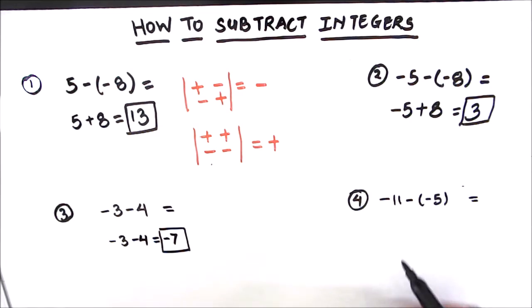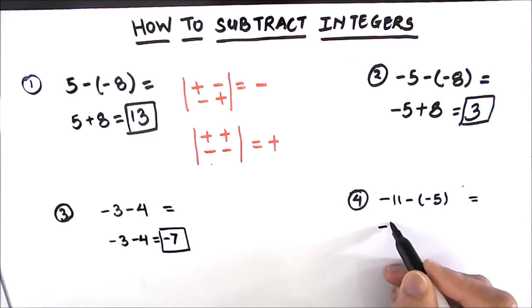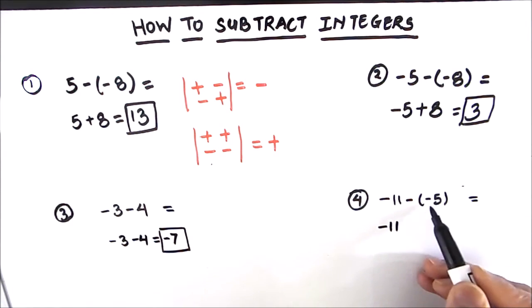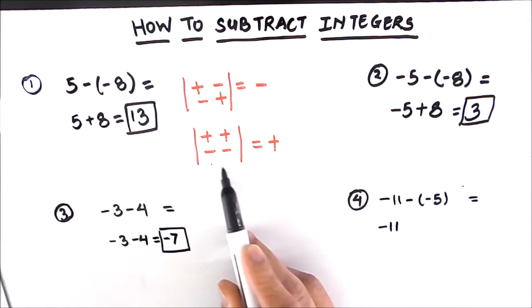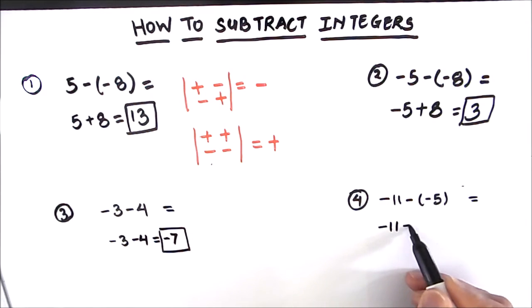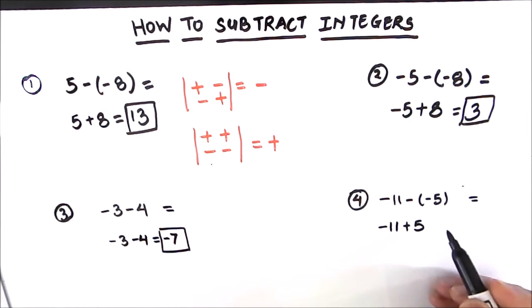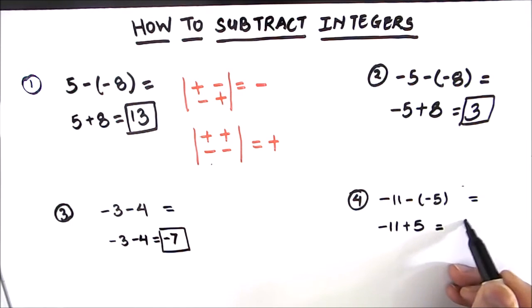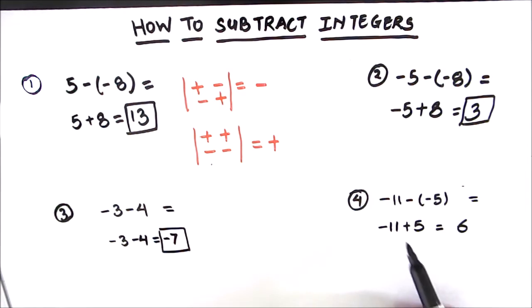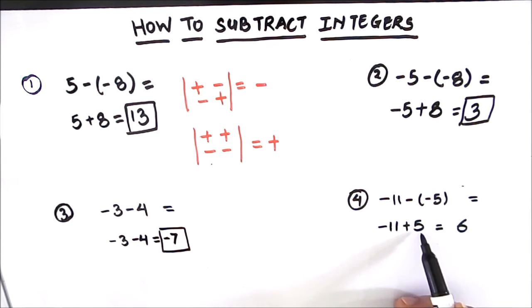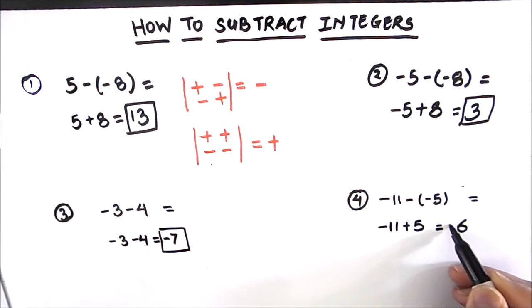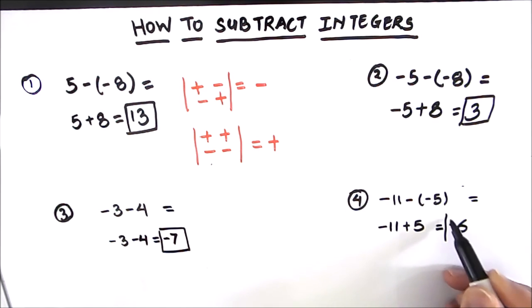Let's move on to the last example. We have negative 11, and there are two negative signs. Whenever there are two negative signs, the sign changes to positive, so that becomes plus 5. Now we have a negative and a positive number, so we subtract the two numbers, giving us 6. The resultant sign belongs to the bigger number — here 11 is bigger than 5, so the sign is negative, and the result is negative 6.